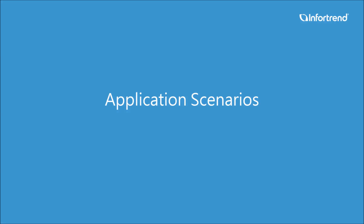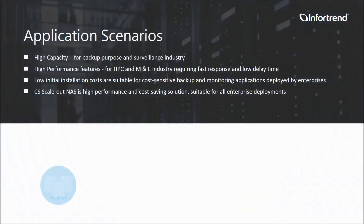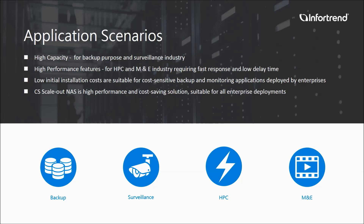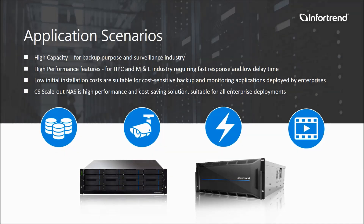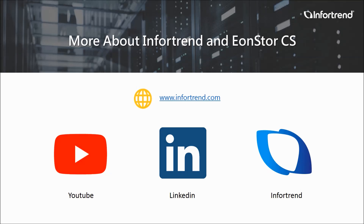After understanding the special characteristics of EonStore CS, let's take a look at how they are used in enterprise application scenarios. CS can be easily deployed for the backup and surveillance monitoring industry that are very sensitive to capacity expenditures. It is also a perfect fit for high performance computing, as well as the media and entertainment industry, which have special requirements for performance. CS has high performance, good cost-performance ratio, flexible deployment options, and by-demand expandability suitable for all kinds of enterprise applications. We will introduce more CS features and operation demonstrations in follow-up videos. For a detailed product introduction, please refer to the official InfoTrend website.